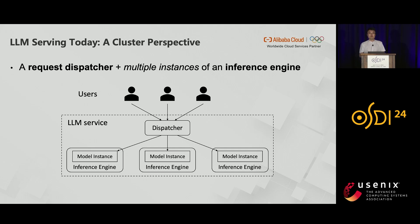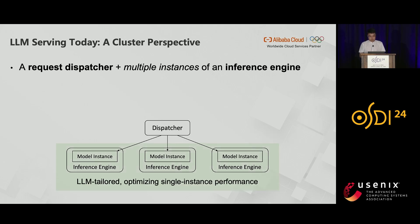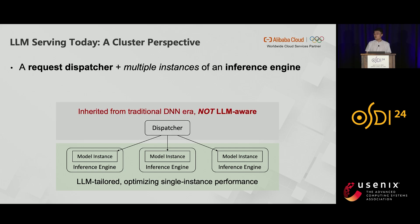Let me begin with showing how LLMs are being served today from a cluster perspective. LLM services are typically deployed as multiple instances of the model running inside a certain inference engine, with a request dispatcher on top routing the incoming requests to the instances. For the inference engine layer, we have seen a lot of systems tailored for LLMs, including those from previous talks, and these systems show superior performance inside a single instance. For the dispatcher, people are still using policies or scheduling systems inherited from the era of traditional DNS, but not designed for LLMs.